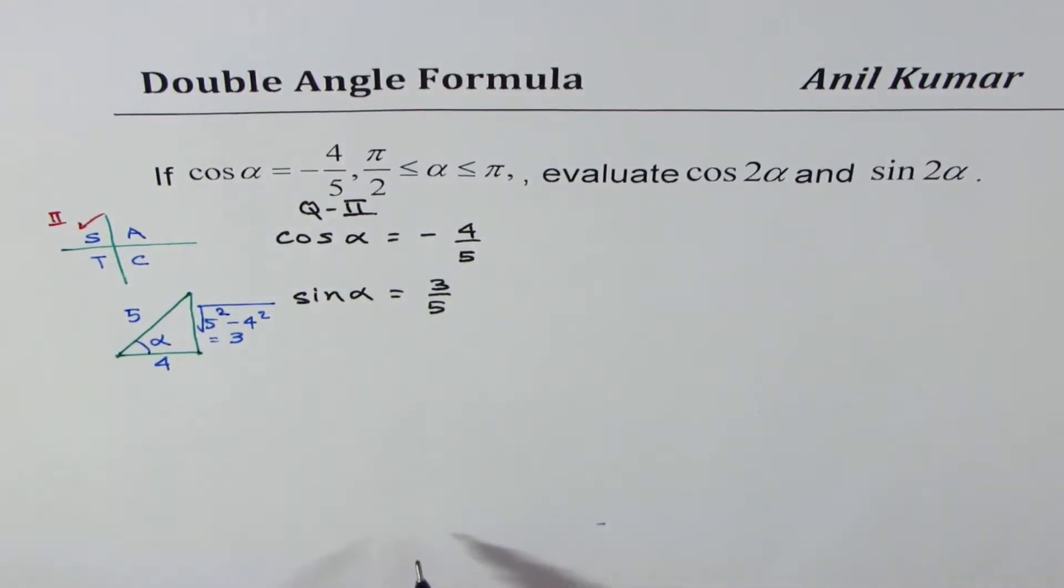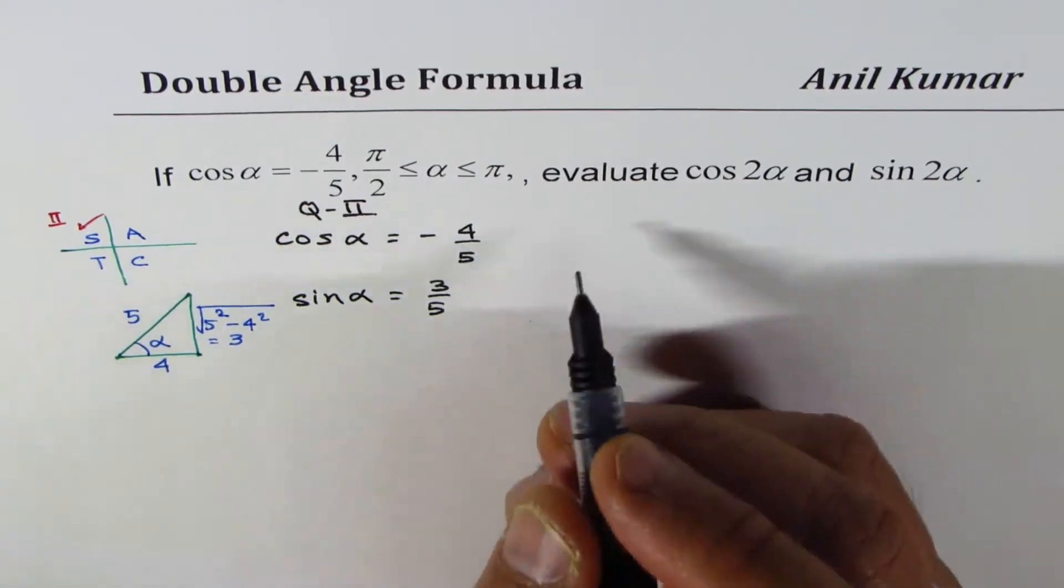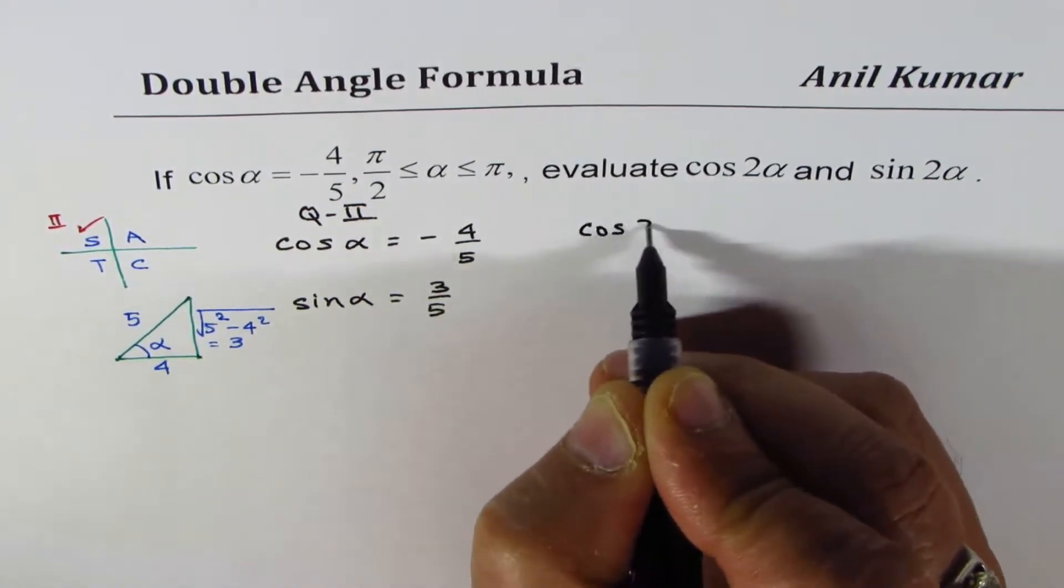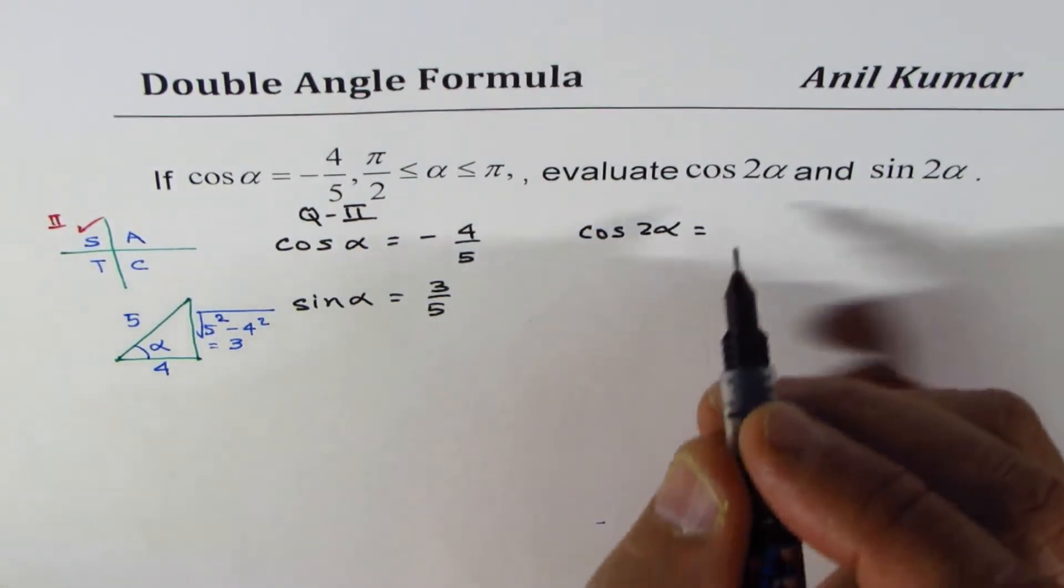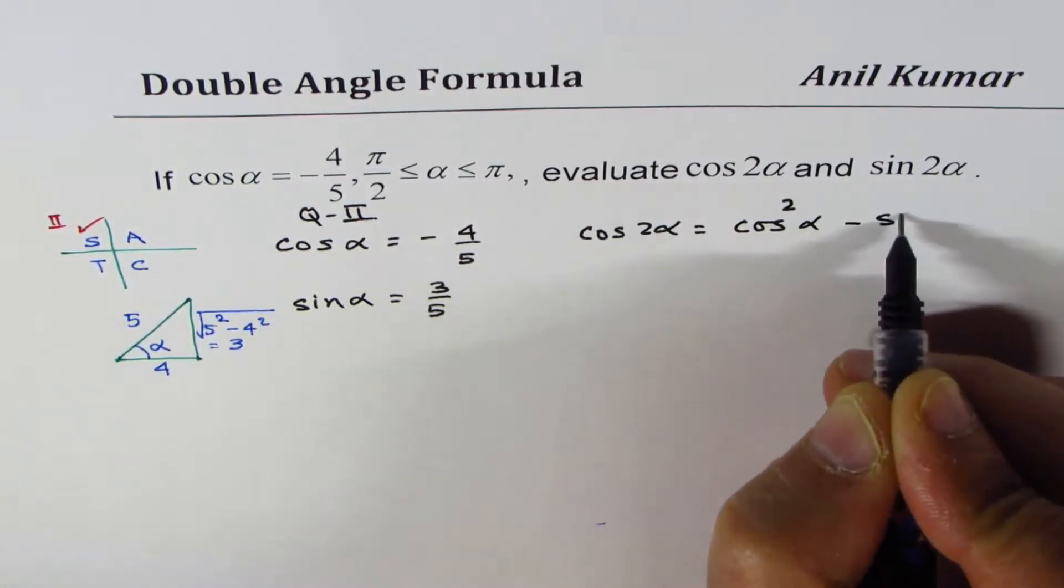Now let us evaluate cos 2 alpha and sine 2 alpha. So cos 2 alpha, applying the formula, we could use cos square alpha minus sine square alpha. Cos square alpha minus sine square alpha.